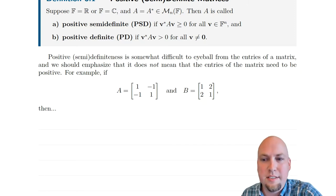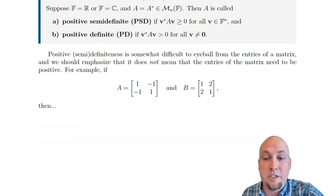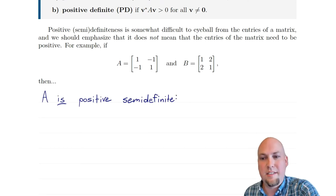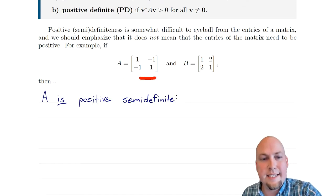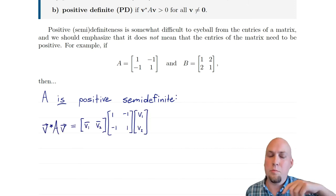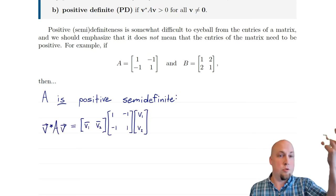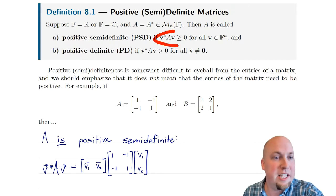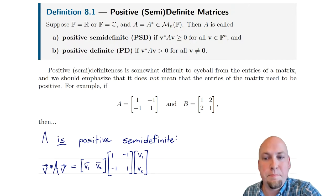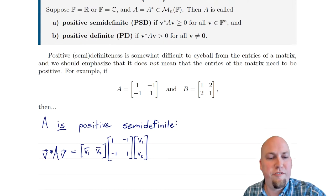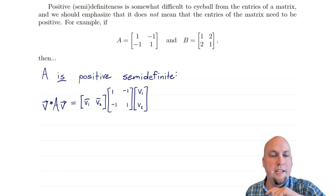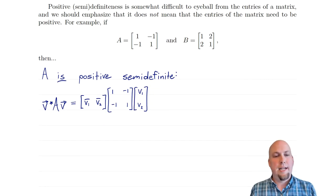Let's go through matrix A in particular first. We're going to show that this matrix A is positive semi-definite directly from the definition. To show it's positive semi-definite, we have to show that V*AV is bigger than or equal to zero no matter what vector V we choose. So I've plugged in an arbitrary vector V on the left and right-hand slots, and now I'm going to do matrix multiplication and expand that out.